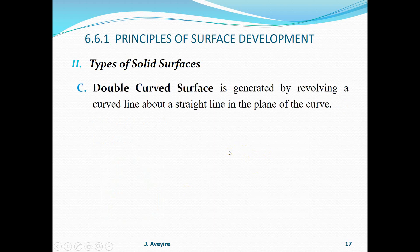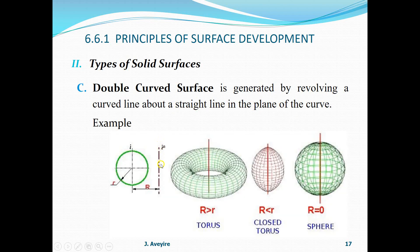Double curved surface is generated by revolving a curved line about a straight line in the plane of the curve - the straight line is the axis. Typical examples: with the axis as the straight line and a circle of radius small r and capital R, for various relationships between R and r - where capital R is greater than small r we have a torus, where capital R is less than small r we have a closed torus, and where capital R equals zero we have a sphere.